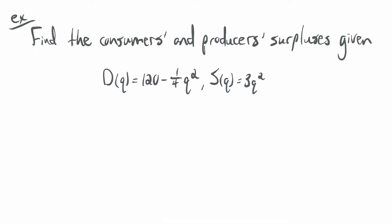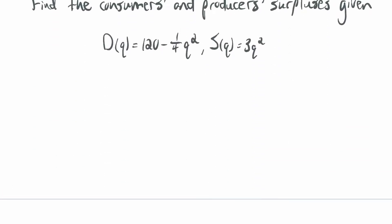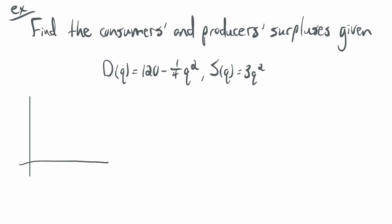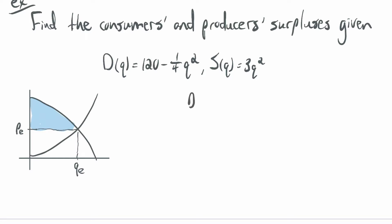Let's find the consumer and producer surpluses given D(Q) = 120 − (1/4)Q² and S(Q) = 3Q². I'll sketch this out: both are quadratics, so we have a downward-opening demand curve and an upward-opening supply curve. We need the equilibrium quantity QE and equilibrium price PE, so the first thing we do is solve D(Q) = S(Q).